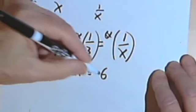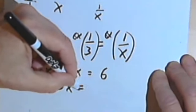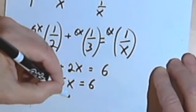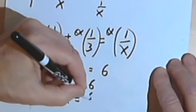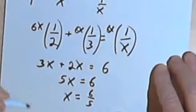So 3x plus 2x equals 6. 5x equals 6, which means x equals six over five. I've just divided both sides by five.